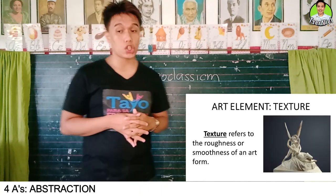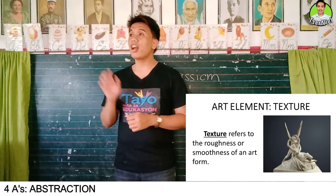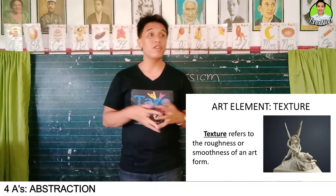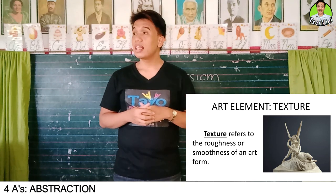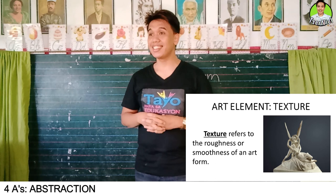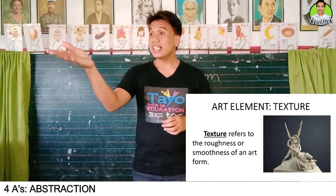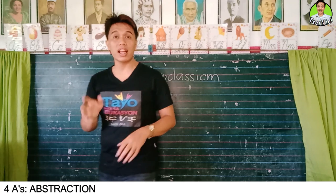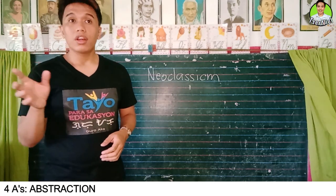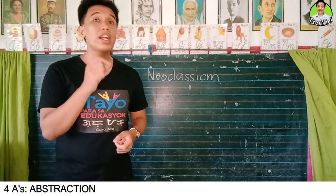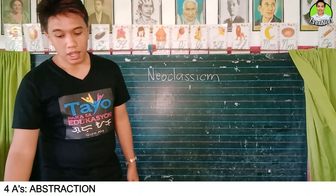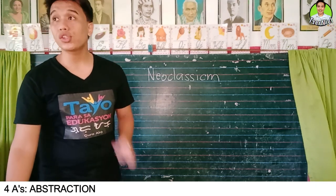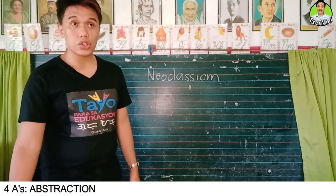Now the fourth element is texture. Texture refers to the roughness or smoothness of an art form. What do you think is the common texture of the art forms from the neoclassic period? The neoclassic art forms have a smooth texture. Well done. Now let us recall what we learned today. The role of art forms in the neoclassic period is to morally uplift us or inspire us. The subject is all about the people from the Greek and Roman history. The line style is always stressed out and well defined. And the texture is always smooth. Do you understand?